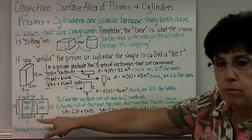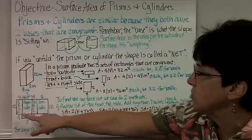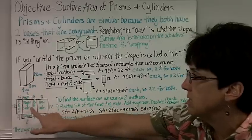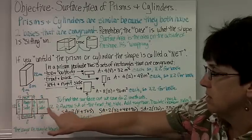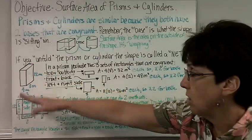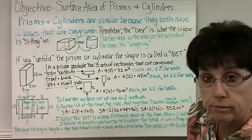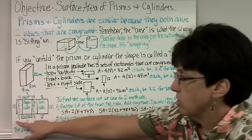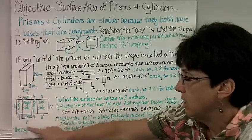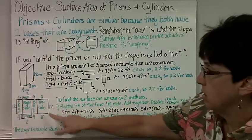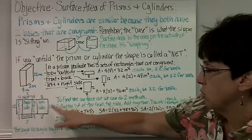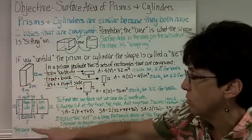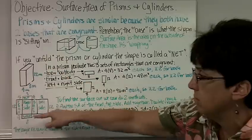I unfolded this so it looks a bit messy, but here is the net. This would be the front side, here's the right side, there's the back side, there's the left side, and then the top and bottom are folded down. Here are the numbers: 4 and 8 along this side, 4 again, 8 along the other side. This is the 12 height. The top is 4 and the bottom is 8 along here.